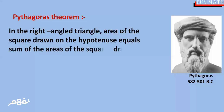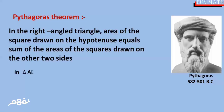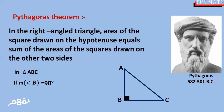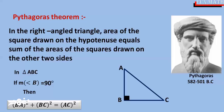Pythagorean theorem: In a right-angle triangle, the area of the square drawn on the hypotenuse equals the sum of the areas of the squares drawn on the other two sides. In triangle ABC, if the measure of angle B equals 90 degrees, then AB squared plus BC squared equals AC squared.